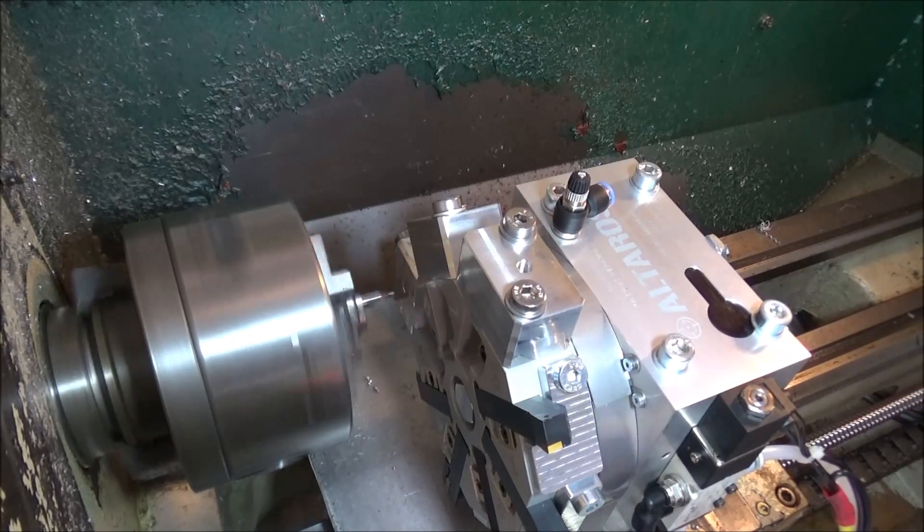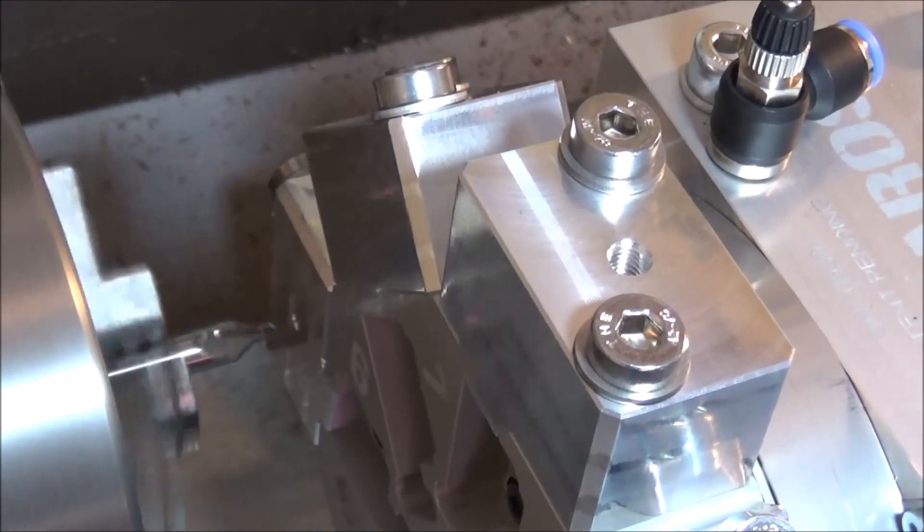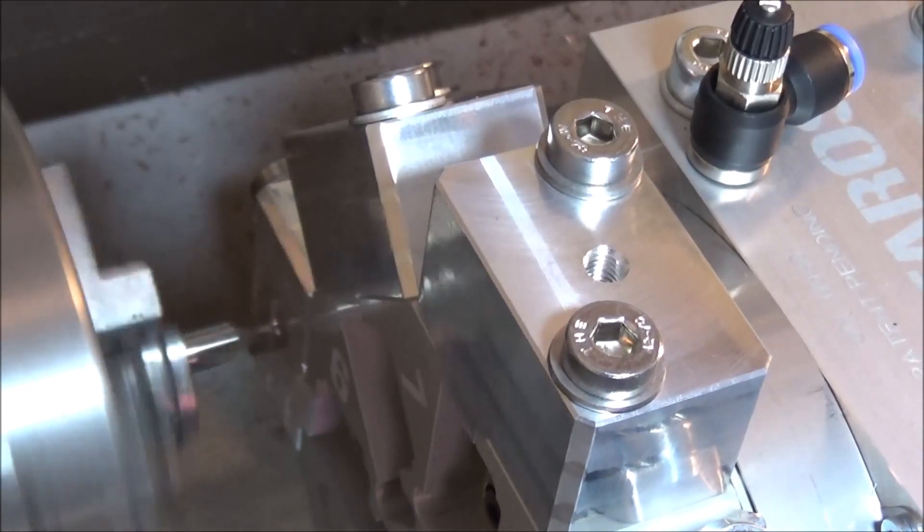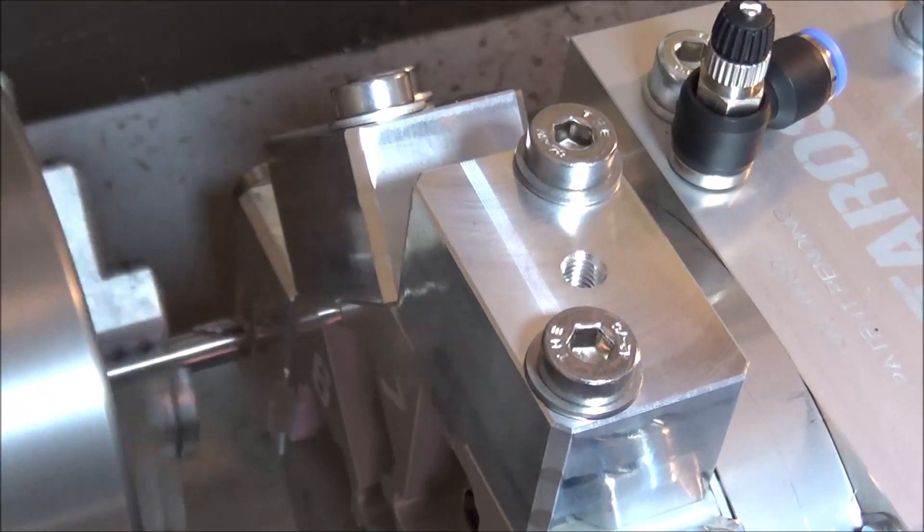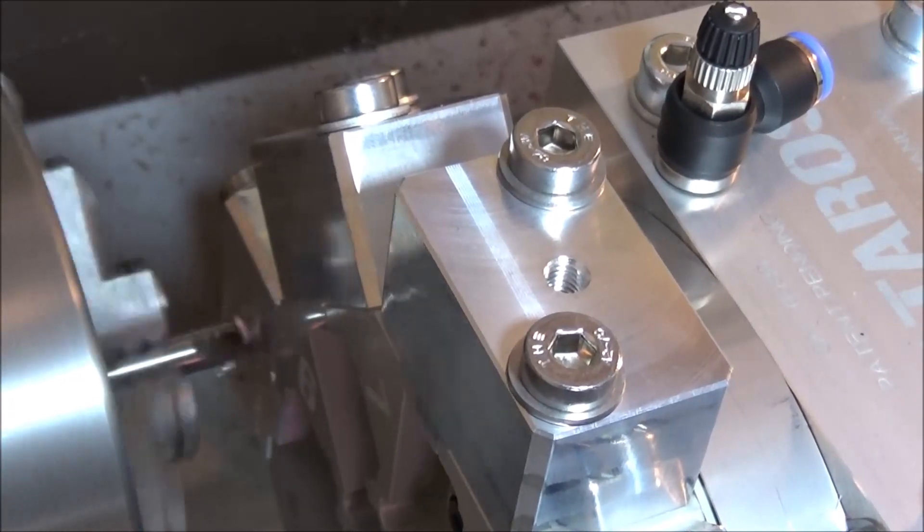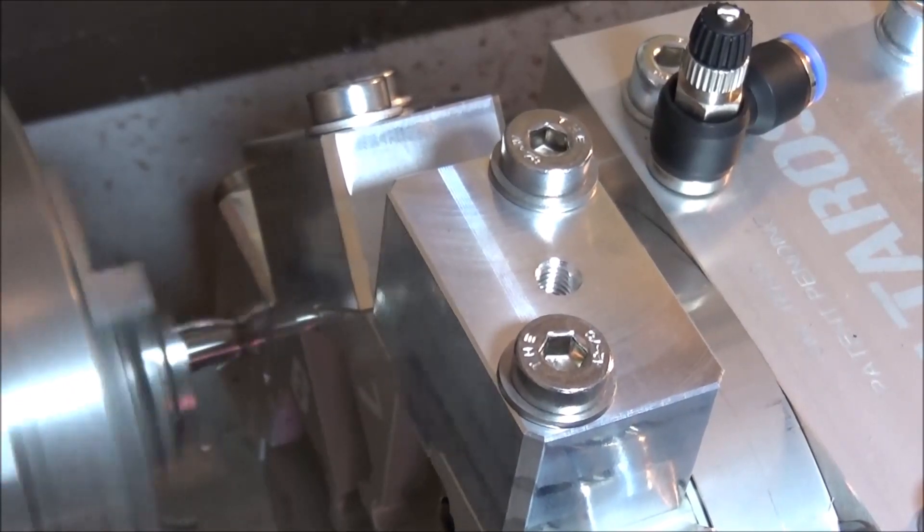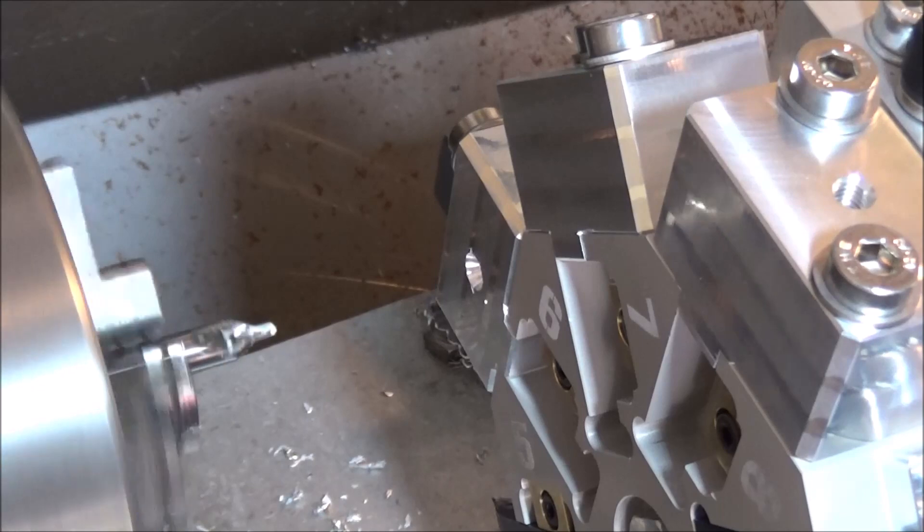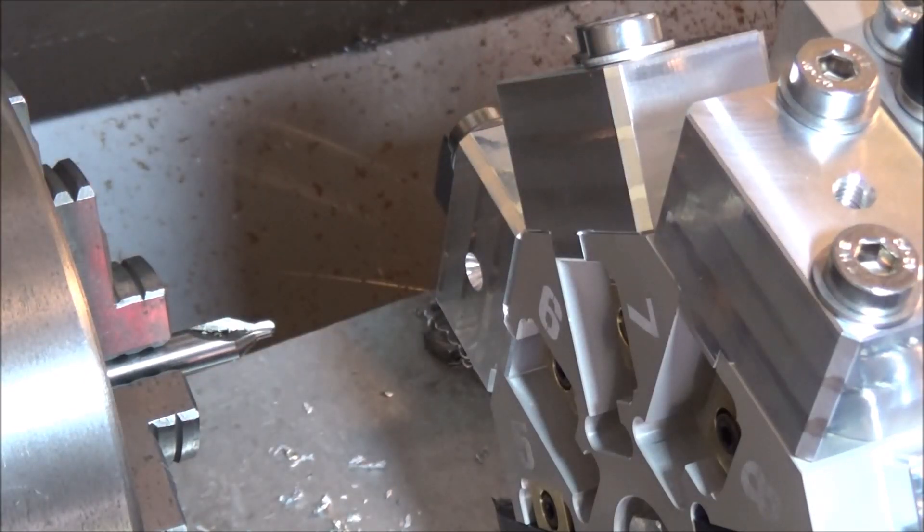I'm just going to jog this in slowly. I've got my jog speed at about one percent here, just kind of stepping it in. Now I'm just going to change this out for a drill bit and we'll start drilling a series of holes until we get to 12 millimeter or close to 12 millimeter.